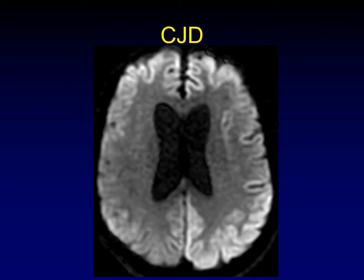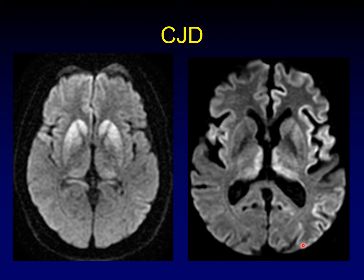Starting with Creutzfeldt-Jakob disease — here we see abnormal gyroform restricted diffusion in the occipital region as well. These patchy areas of gyroform abnormality are rarely symmetric, and that asymmetry is what should suggest this disease. The basal ganglia may alternatively or additionally be involved, as well as the thalamus. The hockey stick sign in the thalamus is affiliated with the variant form of CJD.